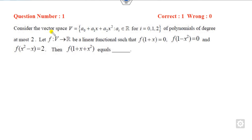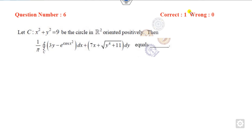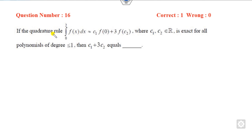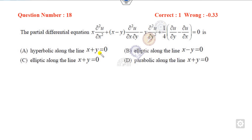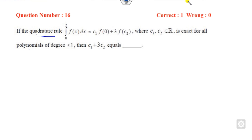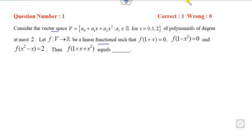The first question is related to vector space and linear functionals. Question number 6 is again 1 mark but with no negative marking, and it is related to the line integral. Question number 16 is related to some quadrature rules, and question number 18 is related to partial differential equations and their classification. All four are 1-mark questions, so you can get 4 marks in a very simple manner.